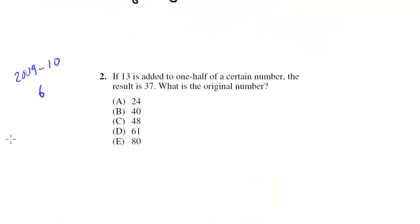Let's look at one from the 2009-2010 test, section 6. If 13 is added to 1 half of a certain number, the result is 37. What is the original number? This one, even though we have answers, we really can't plug them in because we don't have an equation yet. Let's figure out the equation. 13 is added to 1 half of a certain number, so 1 half n. The result is 37, equals 37.